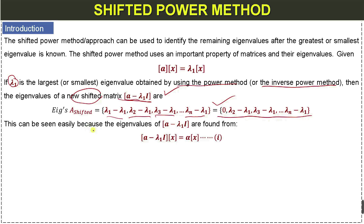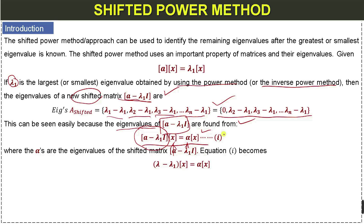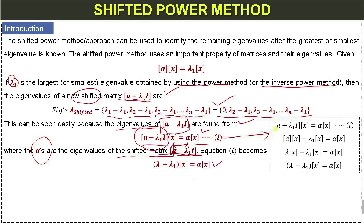This can be seen easily because the eigenvalues of the shifted matrix are found from the equation: the shifted matrix times the vector equals alpha times the eigenvector, where alpha represents the shifted eigenvalues. This is equation 1. Simplifying this equation — by multiplying and rearranging — we know that when we multiply the matrix with a vector, this gives us an eigenvalue and the corresponding eigenvector.